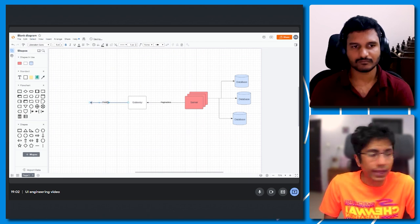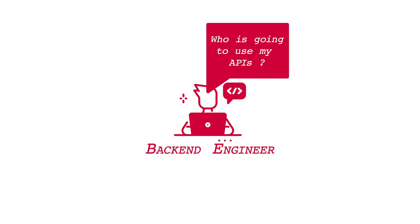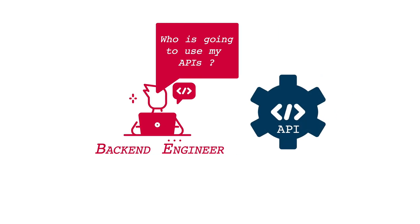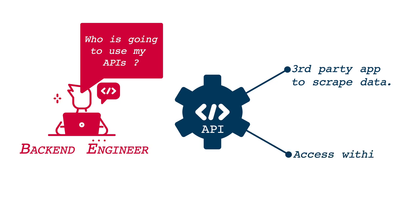This is the point where I say I don't know anything. The problem with backend engineering is I don't know who's actually going to access my API from this gateway. It could be a third-party app scraping Instagram, it could be our own internal people, or a dashboard. So I just know I have to give this kind of response and keep it generic.